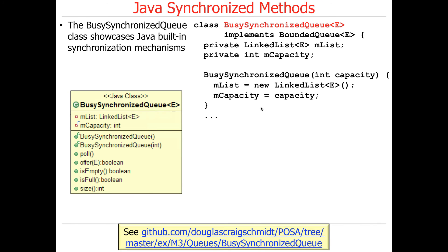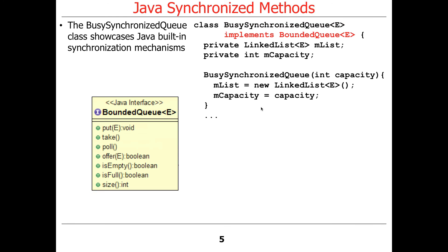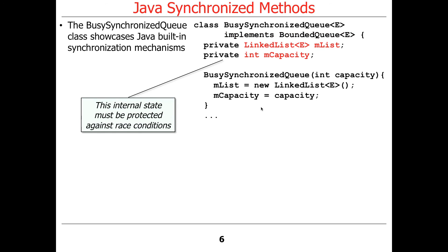To illustrate this, we're going to show a new example: BusySynchronizedQueue. As the name implies, it's synchronized and busy. It implements the bounded queue interface, and we're going to use it to showcase the built-in synchronization mechanisms in monitor objects. It has more or less the same data structures as BuggyQueue — a linked list, a capacity, and so on. This state needs to be protected against race conditions caused by multiple threads.